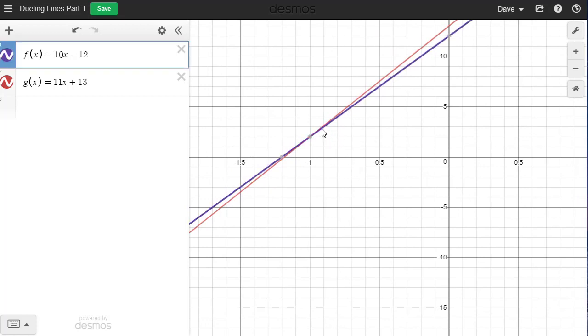So if I want to find the point of intersection here I can click on this and it looks like it's approximately at negative one comma two. All right, so now that I have that I want to save this graph and I want to go and post it in a reply to the person whose graph I took the 11x plus 13 off of.